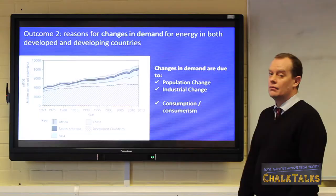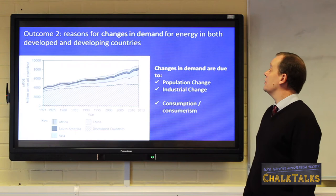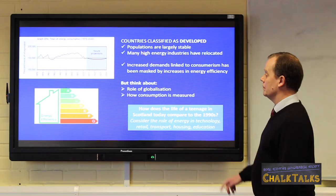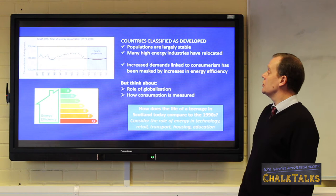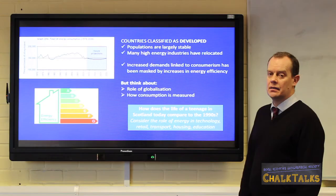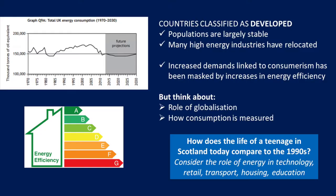Outcome two looks at the reasons for changes in demand for energy in both developed and developing countries. We can think about this in a number of ways: population change, industrial change, but we must remember the importance of consumerism and consumption. Data would suggest that those countries classified as developed have seen either a small increase, a plateauing, or in some cases a decrease in energy demand in recent decades. In simple terms, this might be due to populations being largely stable and to the relocation of high energy manufacturing industries to the developing countries of the world.